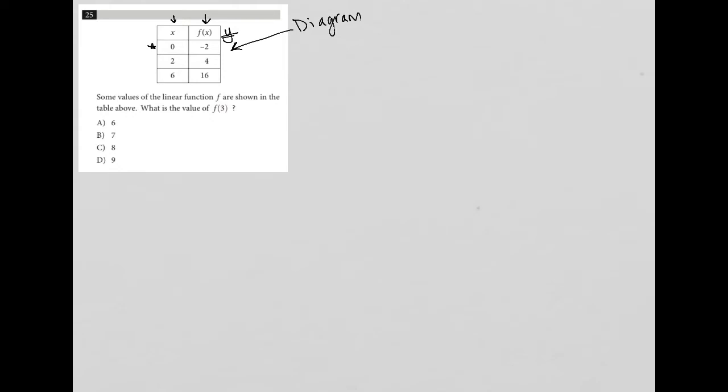Zero, negative two. I'll just write that down. Zero, negative two, then two, four, and six, 16. You don't have to write those down, but I don't know why I'm deciding to write those down right now.